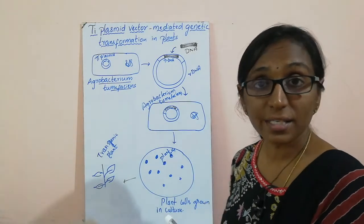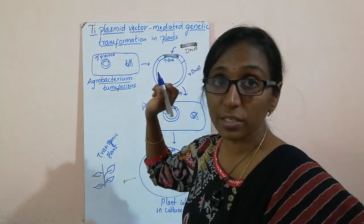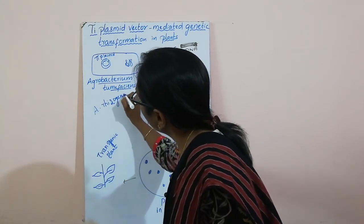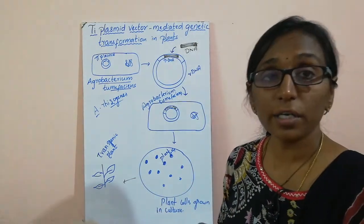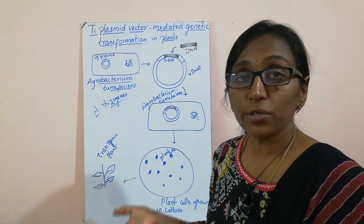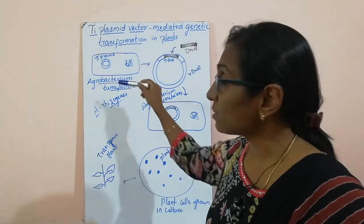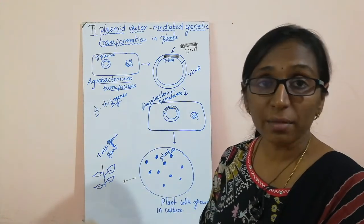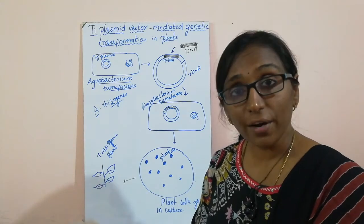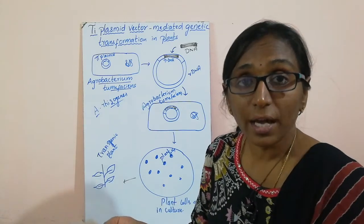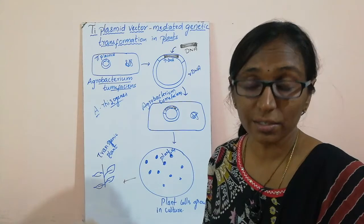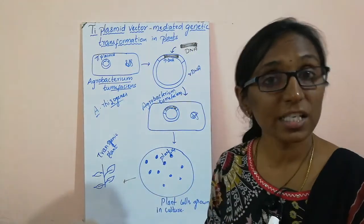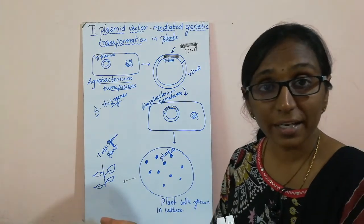Similarly, one more vector used for plants involves Agrobacterium rhizogenes, another bacterium used to induce tumours especially in roots of plants. So two vectors are majorly used in case of plants: Agrobacterium tumefaciens containing the Ti plasmid is a natural vector for plants. Similarly, in case of animals, the retrovirus vector is used to carry a foreign gene. A vector is nothing but a cloning vector which transfers a desired DNA or gene into the host cells.